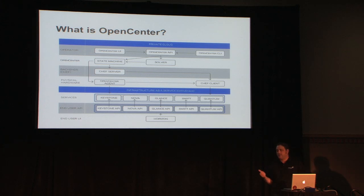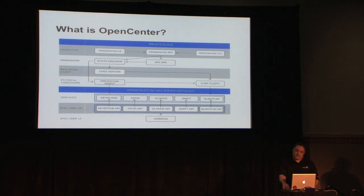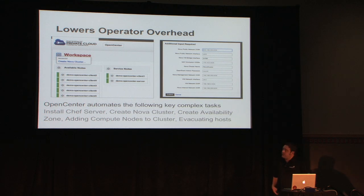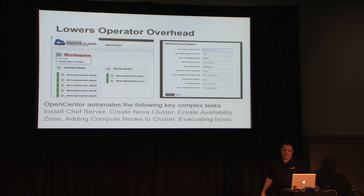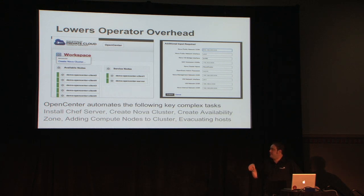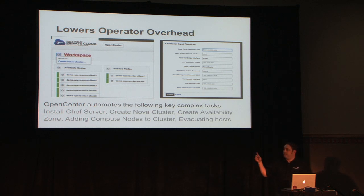Here are some screenshots of the UI. On the left you can see all available nodes. Service nodes — like an OpenCenter server and a Chef server — go into a specially controlled service container that you can't just drop anything into. It gets populated when you run certain adventures like 'install Chef server,' or when the OpenCenter server is installed it automatically moves itself in there.